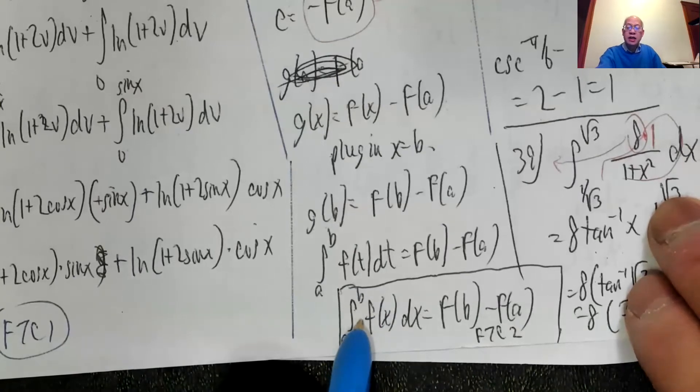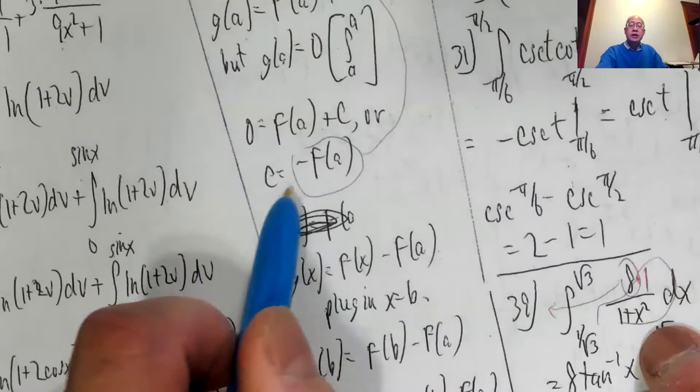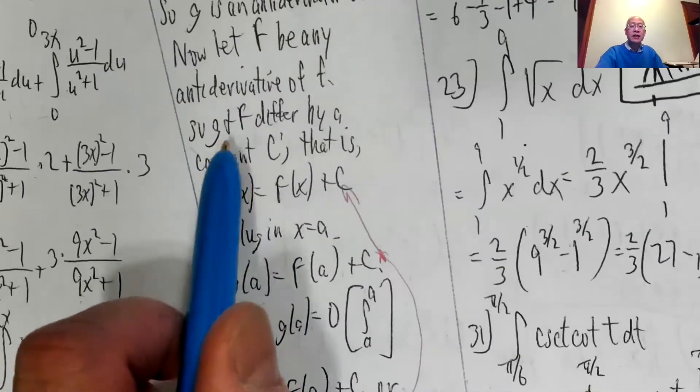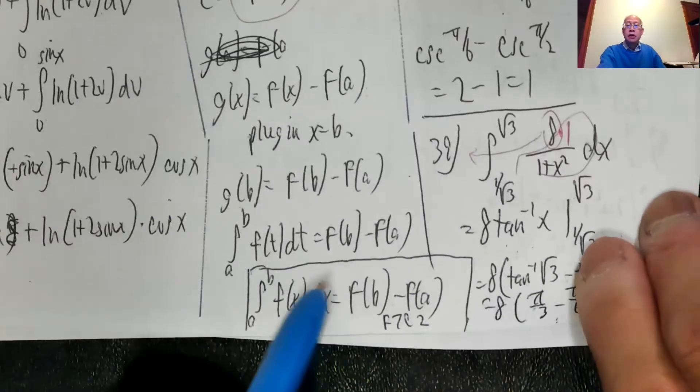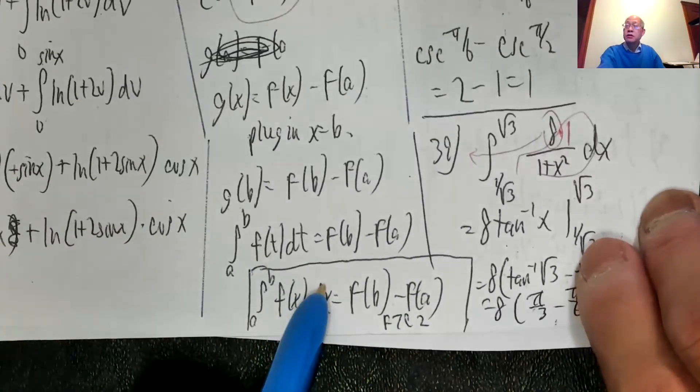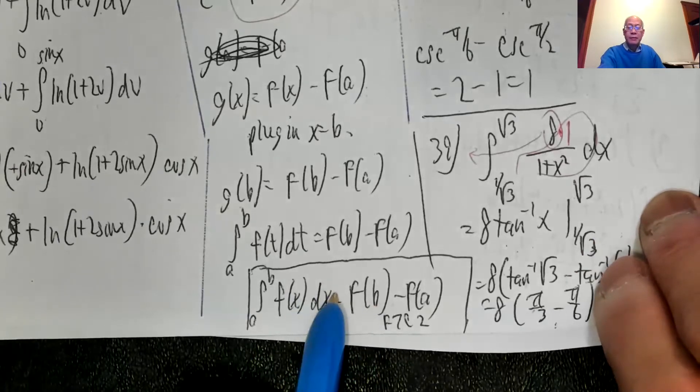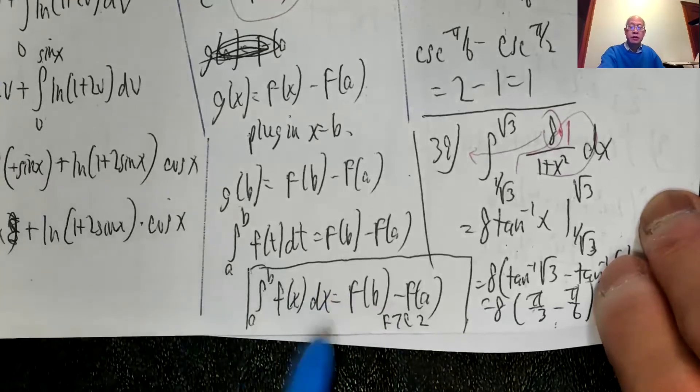So basically you anti-differentiate, you integrate. The theorem says you can pick any anti-derivative. So the easiest one to pick is where c is zero. So we normally don't add any constant. Remember when we were doing indefinite integrals, your answer was blah, blah, blah, plus c. Here you don't need to plus c. So just capital F of b minus capital F of a, let c be zero.